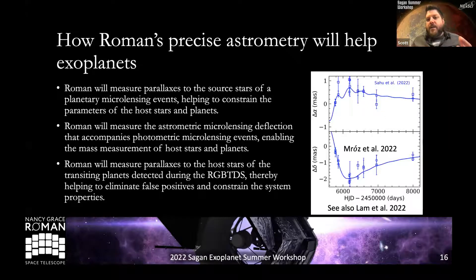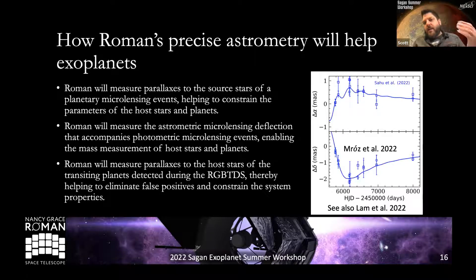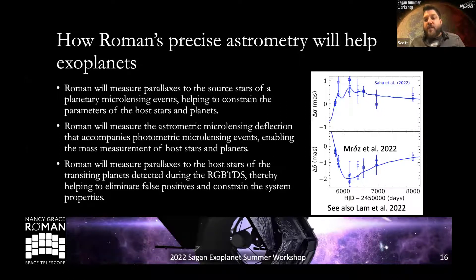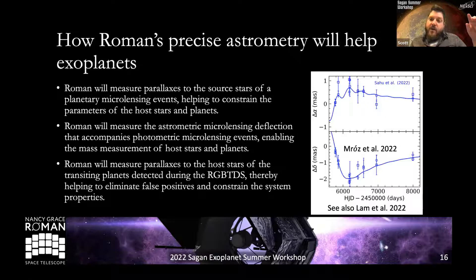Roman will do this much better — with more data points and better precision, we can measure astrometric deflections all the way down to solar-mass hosts and maybe even half-solar-mass hosts in the foreground. For brighter host stars detected with Roman, JWST spectroscopy at R~1000 in the near-infrared can measure effective temperature and metallicity of those host stars, enabling demographic studies as a function of host star mass and metallicity.